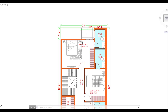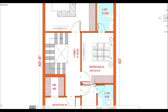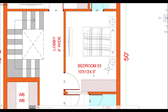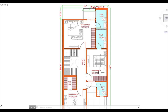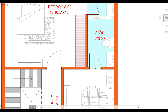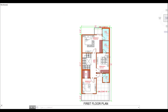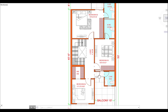Now let's go to bedroom number 3. This bedroom is 10 feet by 13 feet 4.5 inches, which is a nice area. It also has an attached washroom of 5 feet by 8 feet. This is also a nicely designed room.